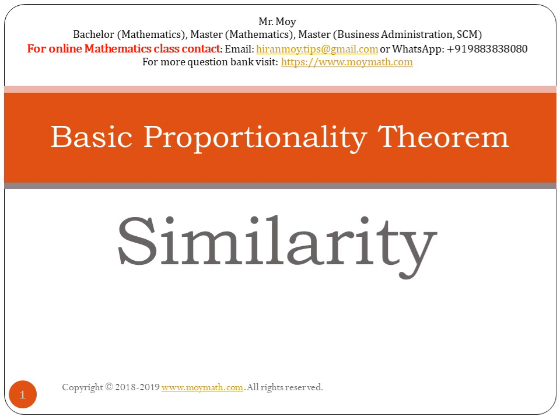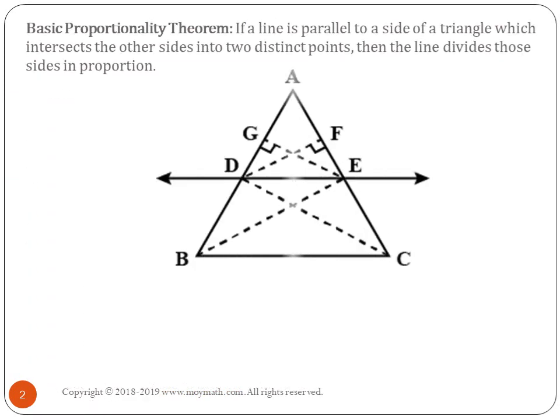It is a very important topic, so you need to learn it from the beginning and in depth. Let's start our topic: the Basic Proportionality Theorem. The theorem states that if a line is parallel to a side of a triangle and intersects the other two sides at two distinct points, then the line divides those two sides in proportion. If you see there is a triangle ABC with a parallel line DE, where DE is parallel to BC.